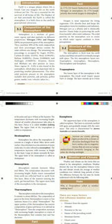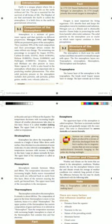The uppermost layer of the troposphere is called the tropopause, the uppermost layer of the stratosphere is the stratopause, and the uppermost layer of the mesosphere is the mesopause. Mesosphere extends from 50 to 80 kilometers; temperature decreases with increasing height; radio waves are transmitted; and most meteoroids get burnt in this layer.